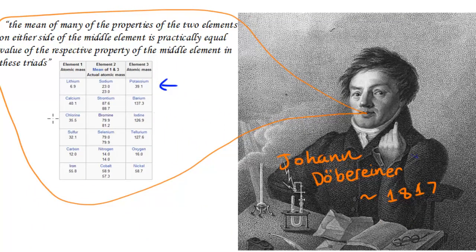He said the mean of the many properties of the two elements on either side of the middle element is practically equal to the value of the respective property of the middle element in these triads.